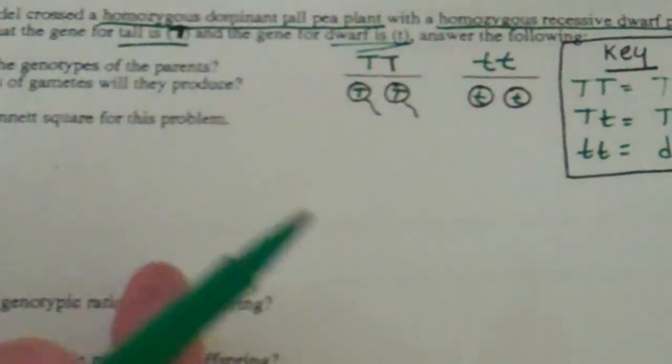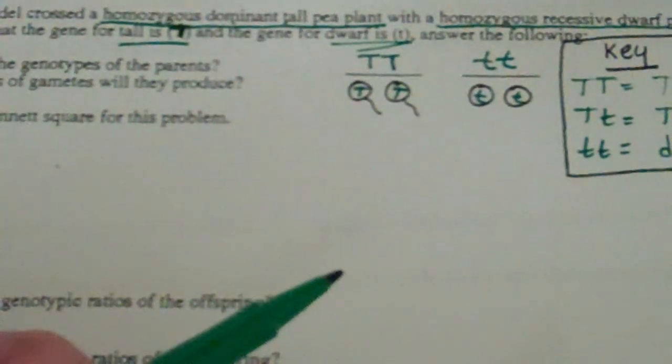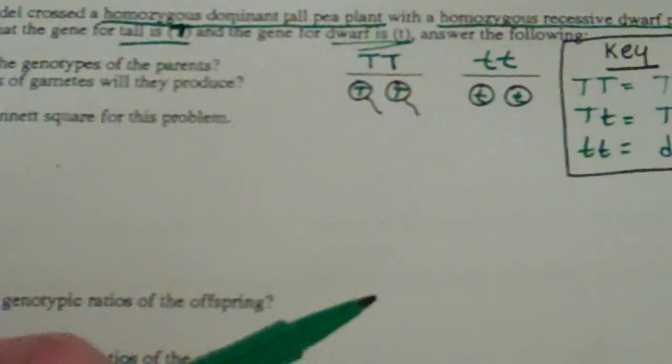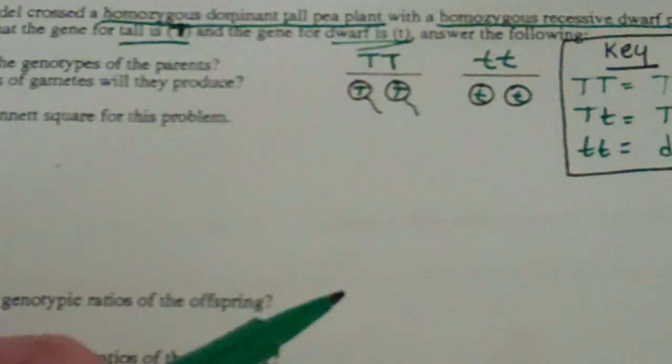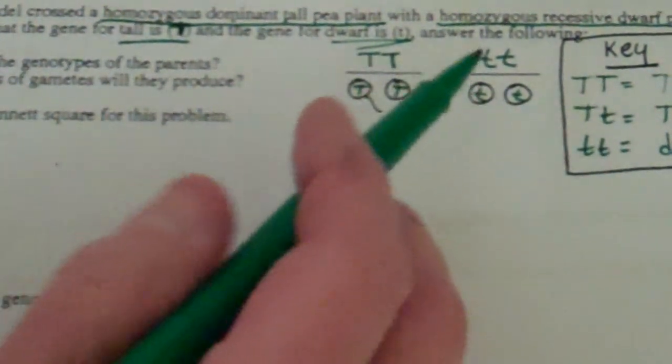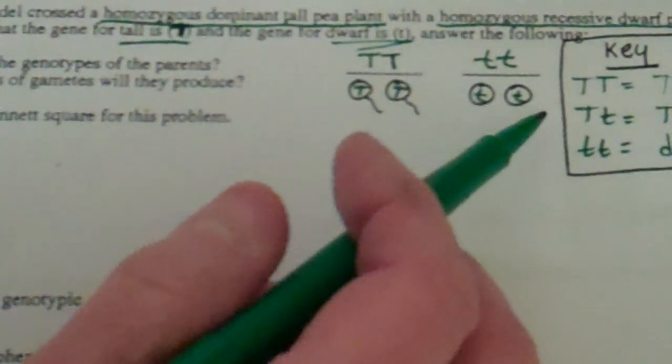So this parent can make these kinds of sex cells, the other parent can make this kind of sex cell. I often get the question, how do you know which one's mom and which one's dad? We don't. They didn't tell us, and in this kind of problem it doesn't matter.